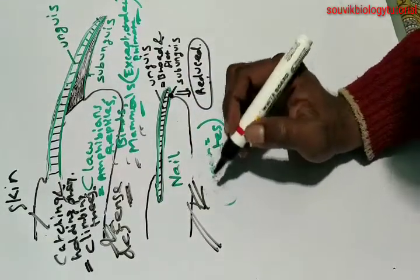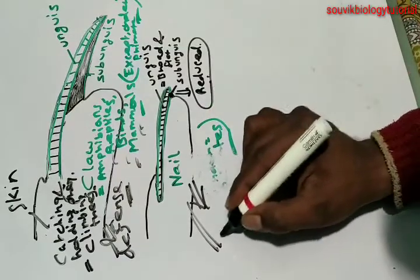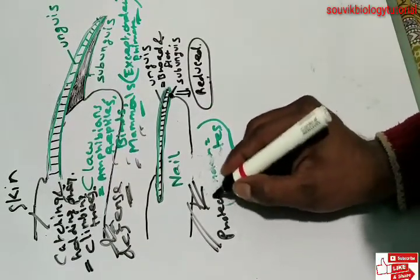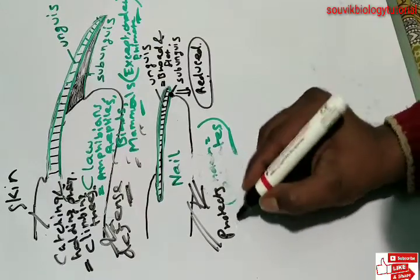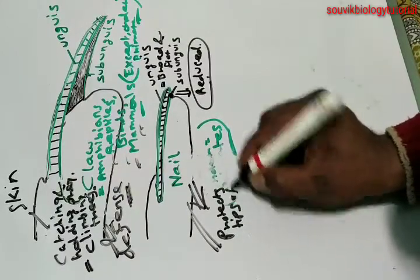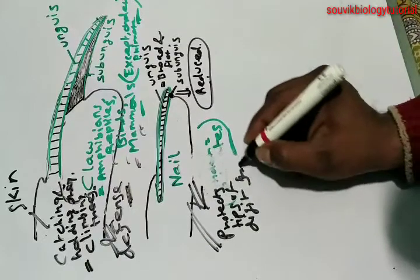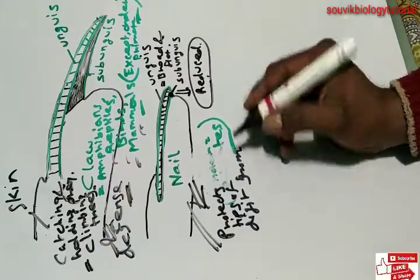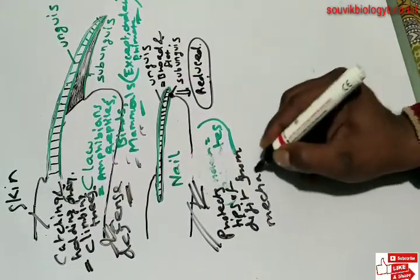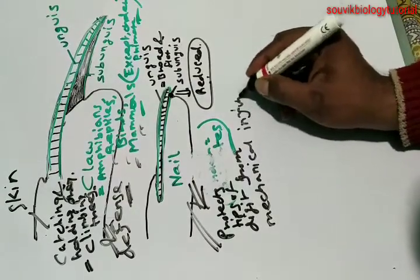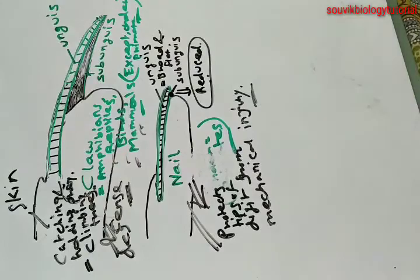The function of the nail is that it mainly protects the tips of digits from any kind of mechanical injury.